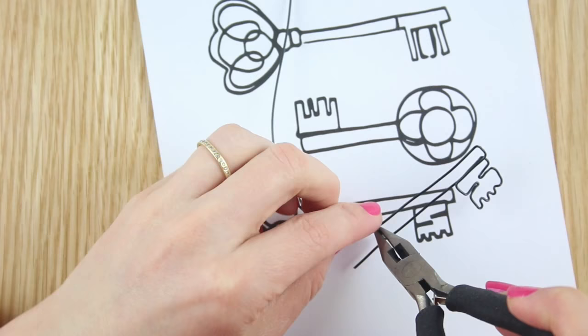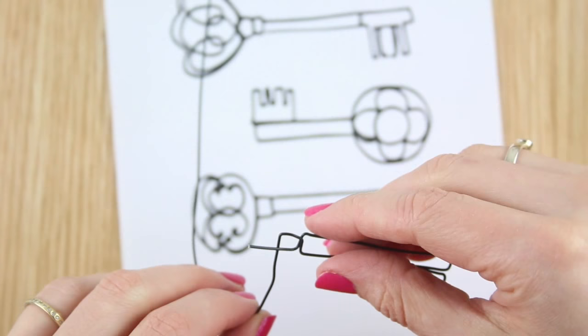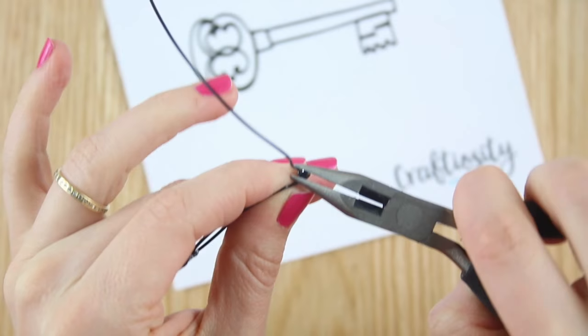Turn the wire up, along to the left, and then down again to begin the bow or the head of the key. Before starting the bow tie and cut off the extra one centimeter of wire around the piece you currently hold.